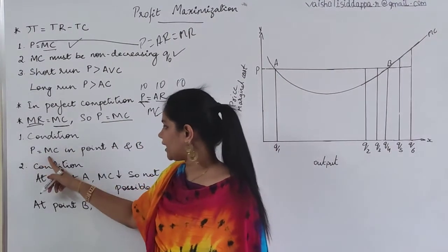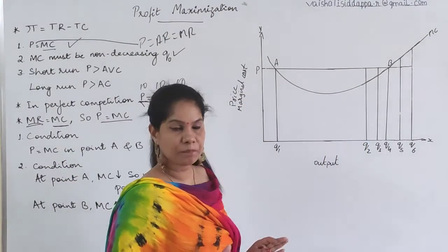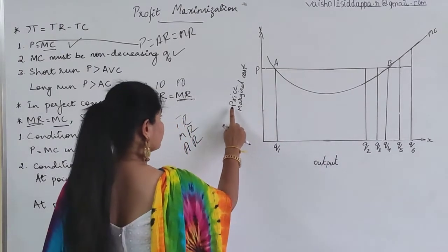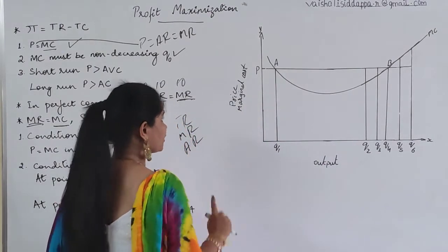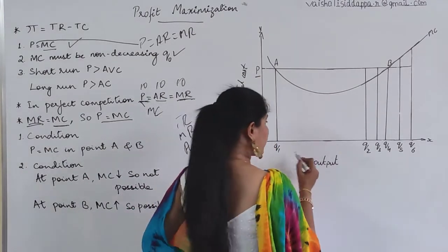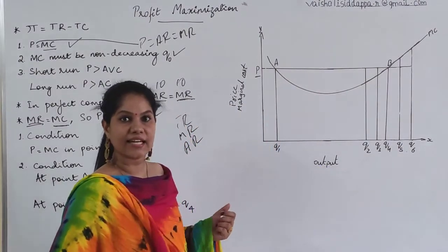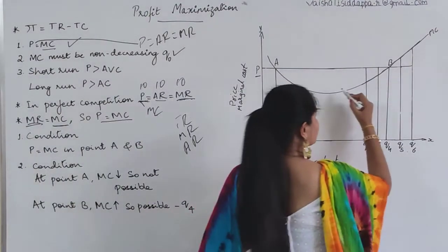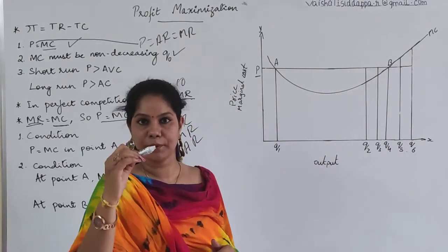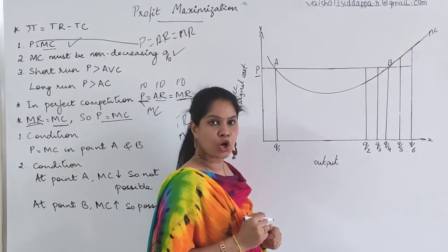In the diagram, the X-axis has output and the Y-axis has price and marginal cost. P is the price line. Quantities Q1, Q2, Q3, Q4, Q5, Q6 are marked on the X-axis. The MC curve is U-shaped — a broad U shape — representing marginal cost. Two intersection points are visible: point A and point B.